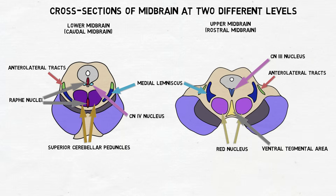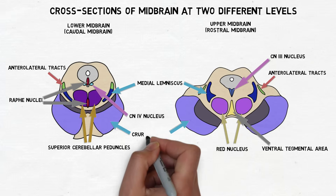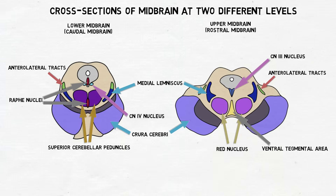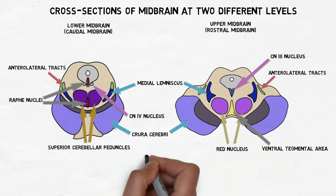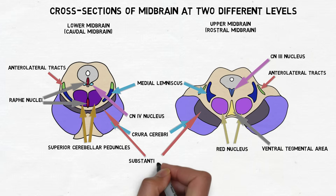The basis pedunculi include the crus cerebri, two large bundles of axons that contain fibers from motor pathways like the corticospinal and corticobulbar tracts. The basis pedunculi also include the substantia nigra, which is another major dopamine-producing structure in the brain.